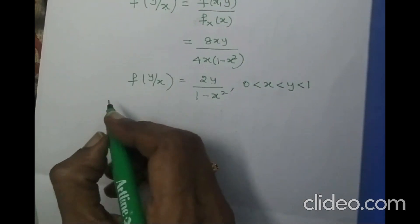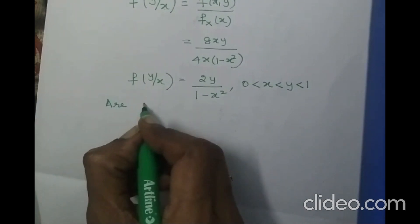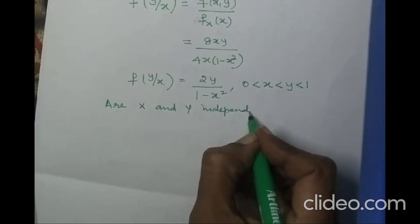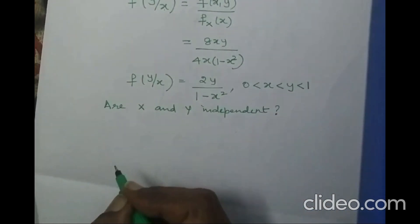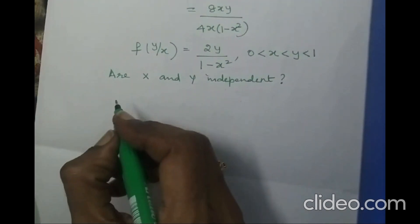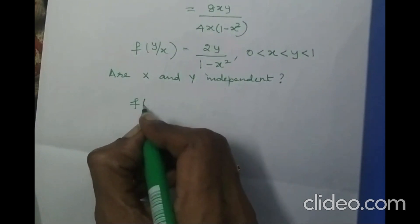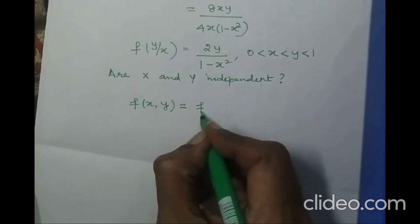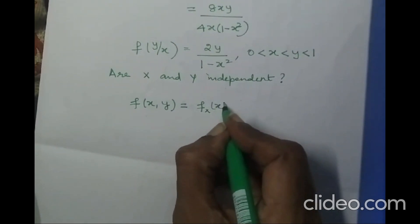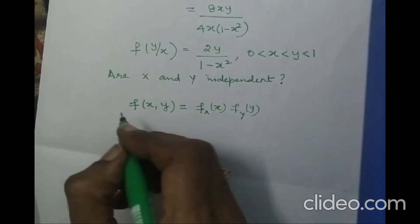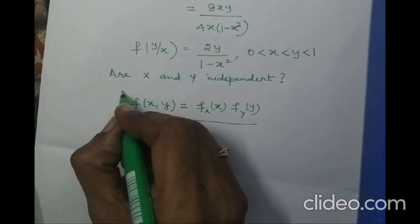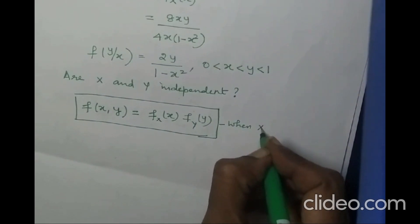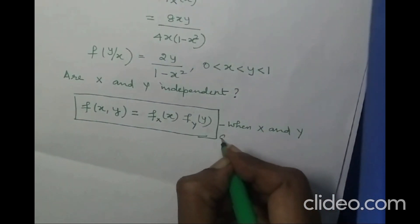Now the question asks: are x and y independent? This is an important part B question where you can easily score 8 marks. If x and y are independent, then the joint density function f(x, y) must equal the product of the marginal density functions fx(x) · fy(y). Here, 4x(1 − x²) × 4y³ = 16xy³(1 − x²), which is not equal to 8xy. Therefore x and y are not independent.